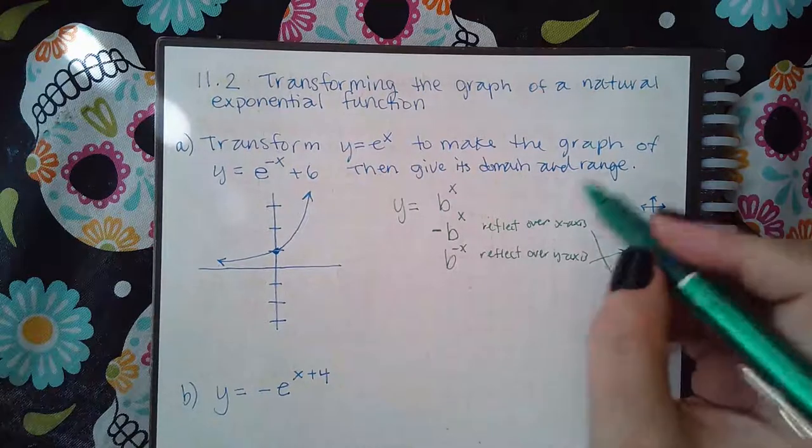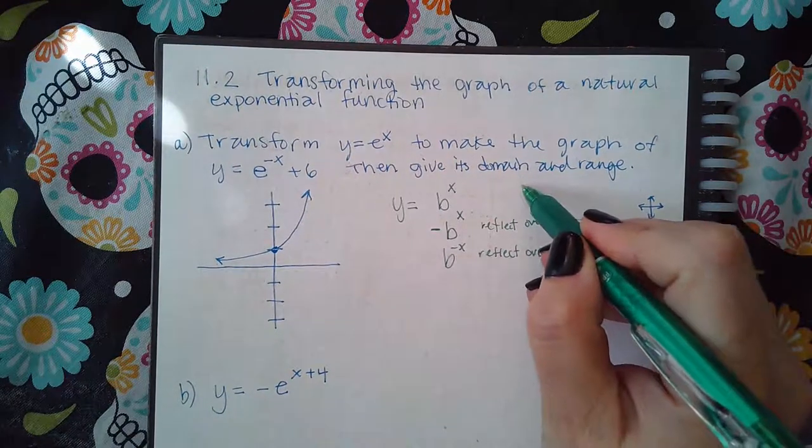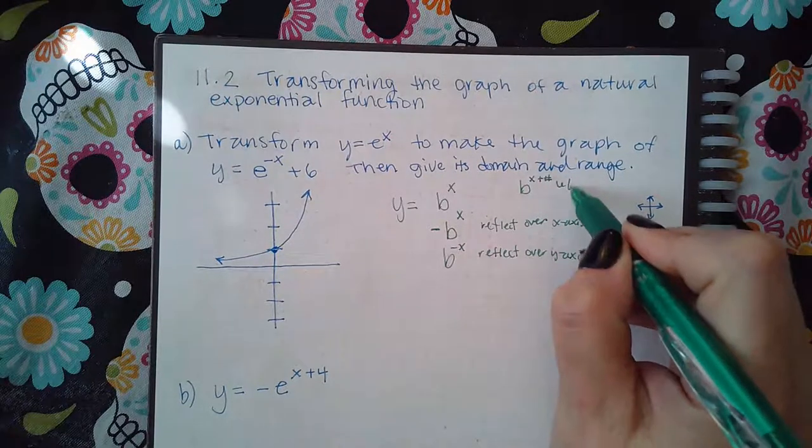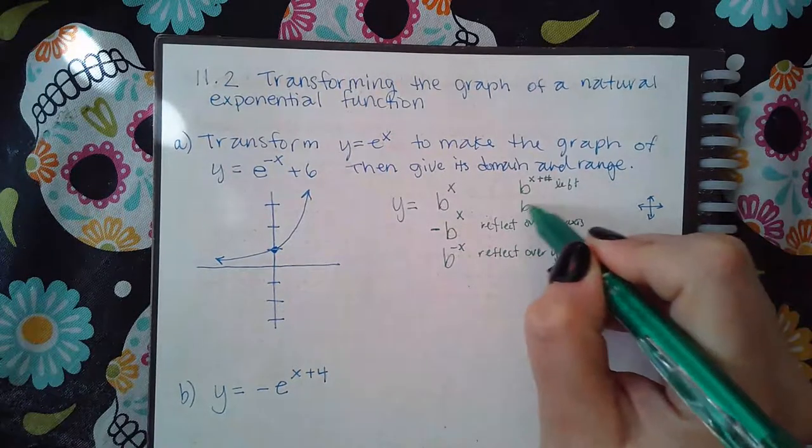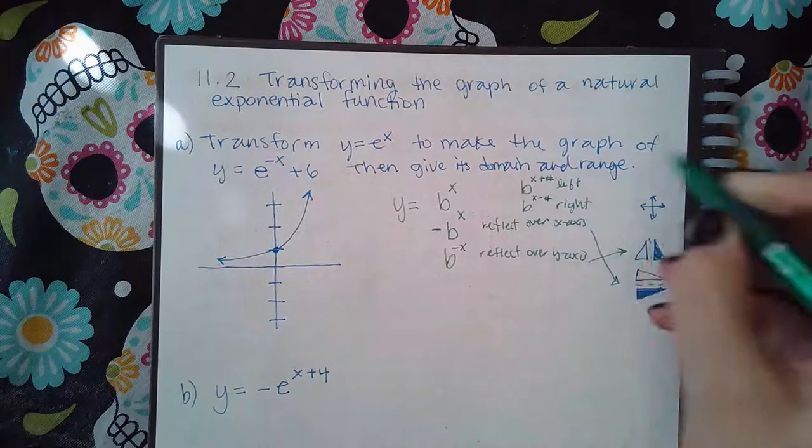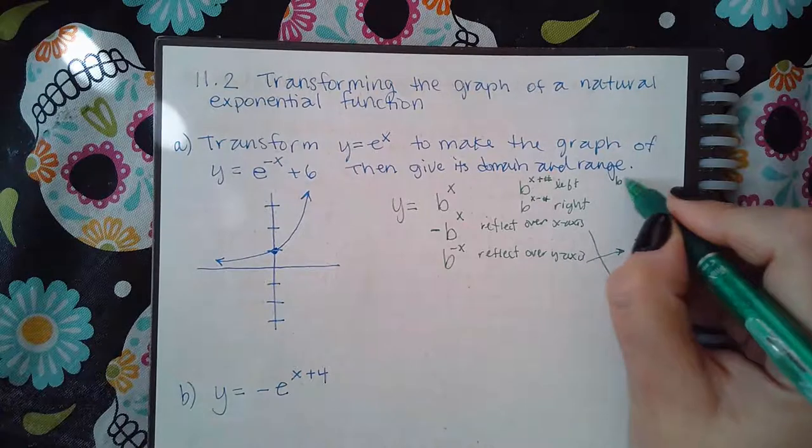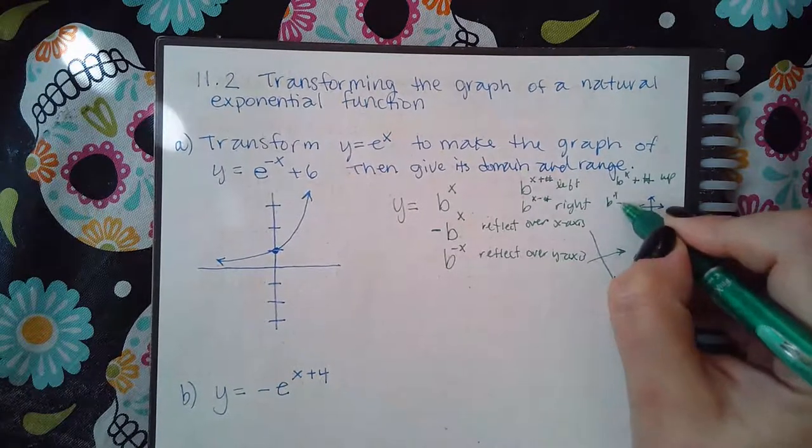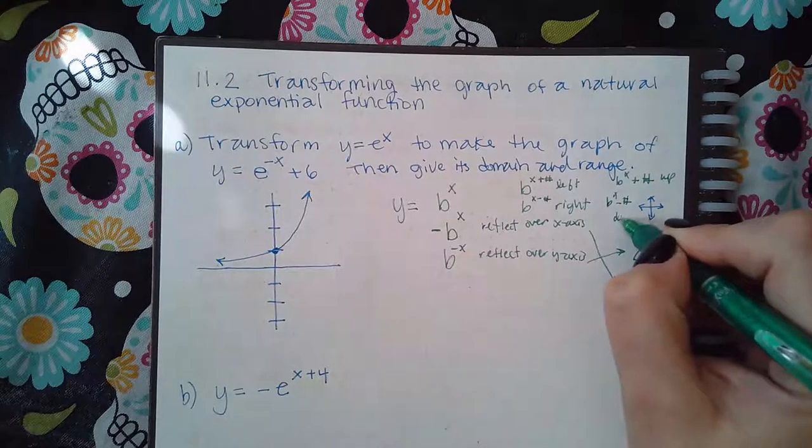And then we also know that we have shifts. So if you have x plus a number, it's gonna go left. If you have x minus a number, you know it's gonna go right. If you have plus a number on the outside, it's gonna go up. And if you have minus a number on the outside, it's gonna go down.